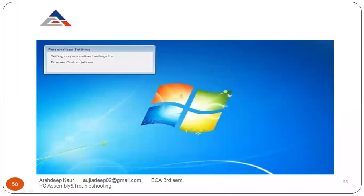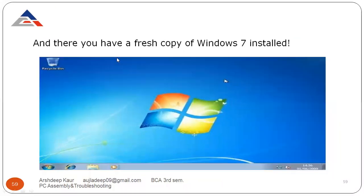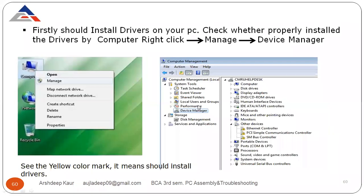You can set up browser customizations, and you now have a working copy of Windows 7 installed. This is the Windows 7 desktop — this is how Windows 7 looks. After the window is installed, the first thing you should do is install the drivers on your PC.